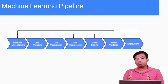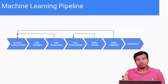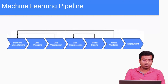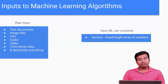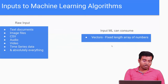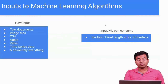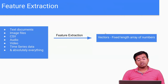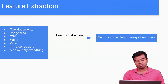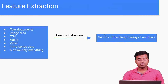Deployment means putting the trained model in the marketplace so that consumers can actually access and make use of it. It can sit behind a RESTful interface. Generally, for all your machine learning algorithms you need real data: text, image, CSV, audio, video, time series, and absolutely anything. What your machine learning can understand is nothing more than vectors — fixed-length arrays of vectors. So you have to convert your raw data to this vector format, and that is known as feature extraction, which converts any CSV, audio, video, or time series to vectors.